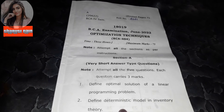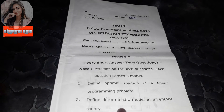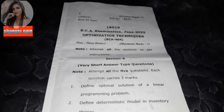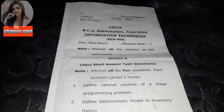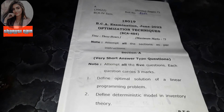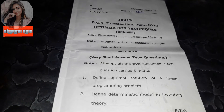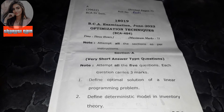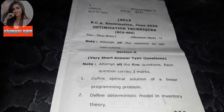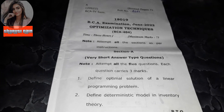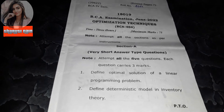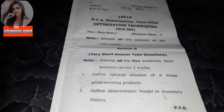Section A — very short answer type questions: attempt all five questions. Each question carries three marks. You must attempt all questions. Question number one: define optimal solution of a linear programming problem.